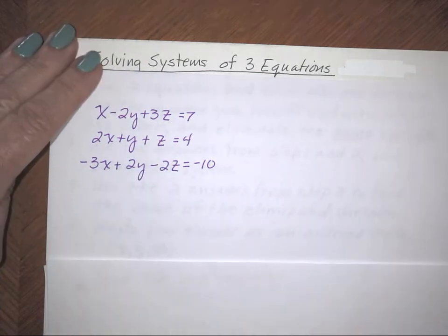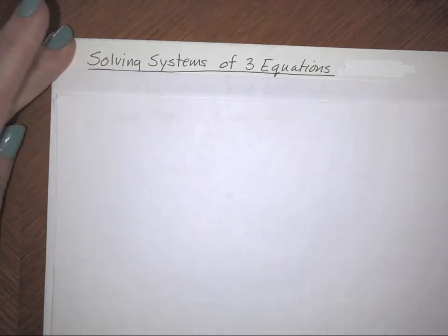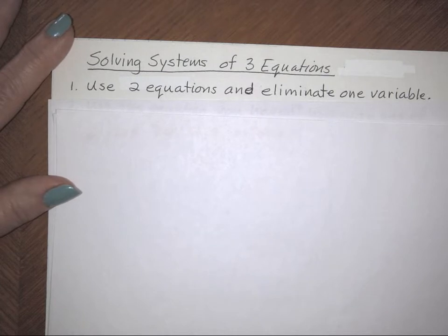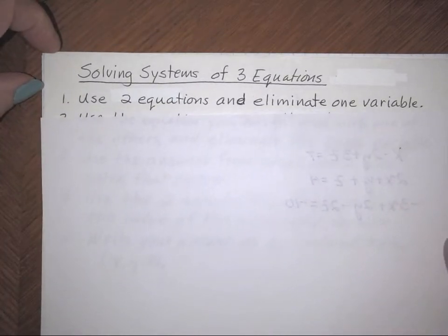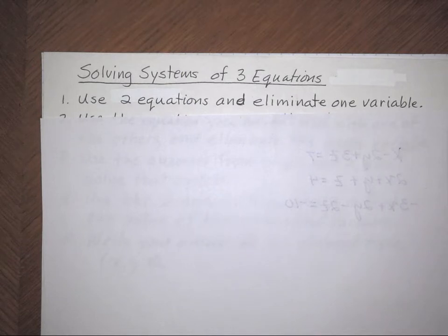Now you're going to write the steps down. These are my notes — not straight out of the book. I'm planning to work three problems completely, then we'll talk about setting up a word problem as a system. Step one: use two of the equations and eliminate one variable. It doesn't matter which variable you choose.